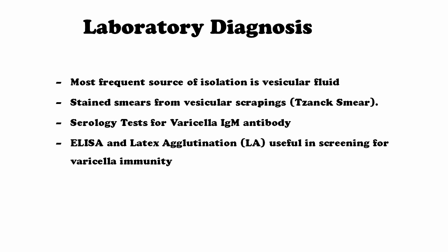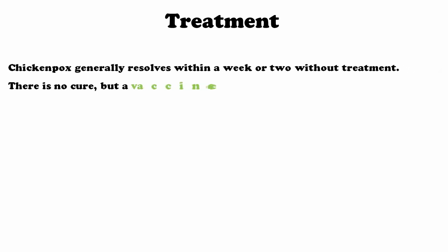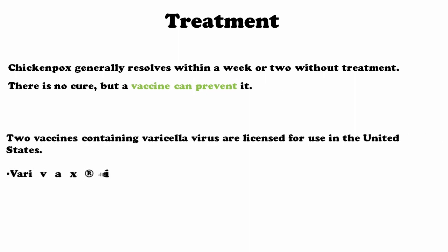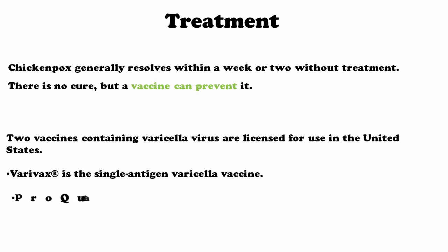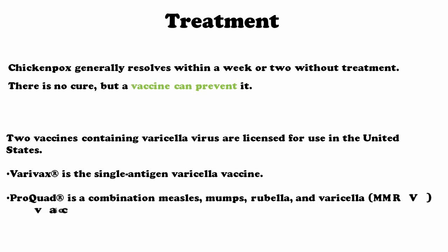Coming to treatment: there is no drug which will eliminate the virus, but there is a vaccine approach which is very useful in preventing the disease. Two vaccines containing varicella virus are licensed in the US — Varivax and ProQuad. Varivax is a single-antigen varicella vaccine, and ProQuad is a combination of measles, mumps, rubella and varicella, which helps prevent more diseases.